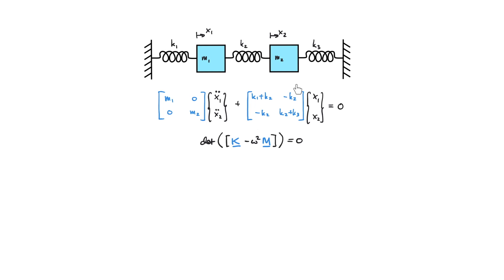We have derived the equations of motion of a two degree of freedom system and we can express them into a matrix form where M denotes the mass matrix and K denotes the stiffness matrix. To solve this equation of motion, we solve the determinant of K minus omega squared M equals zero.